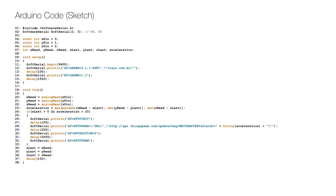This is the Arduino code or sketch to check for acceleration above a threshold and report such occurrences over GPRS to the server. After the initial include of the software serial library on line 1, a variable is created for it on line 2. Constants for the accelerator pins are defined on lines 4 to 6, followed by some variable declarations on line 7.